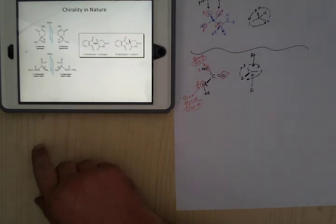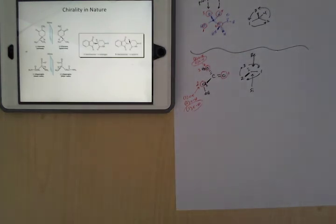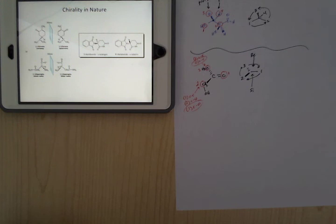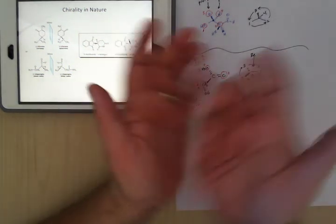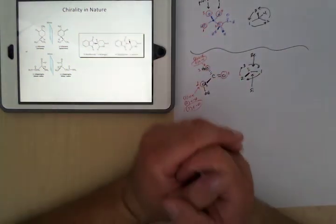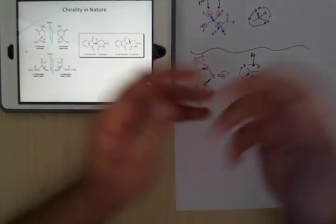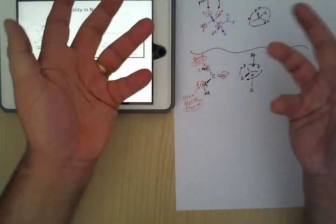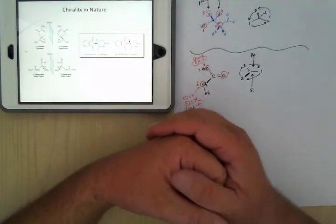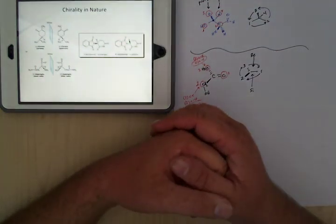Chirality is exceedingly important in nature. Your hands are chiral — non-superimposable mirror images — and your gloves are chiral as well. The right and left hand gloves are mirrored between each other, just like enantiomers.